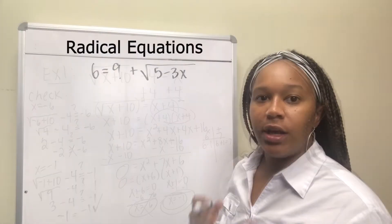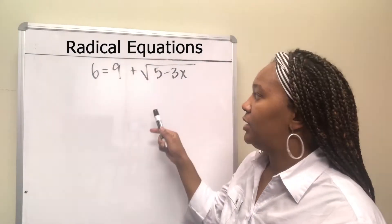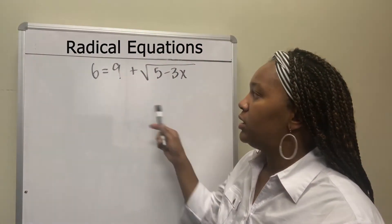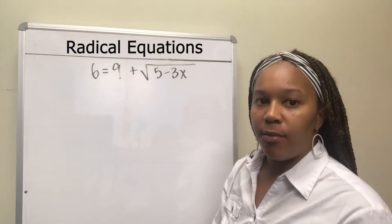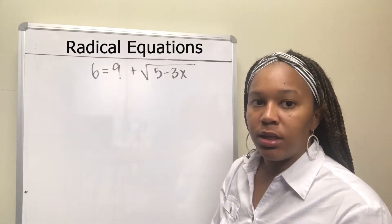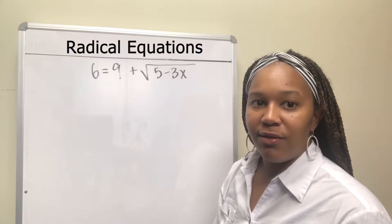Now pause and see if you can solve: 6 equals 9 plus the square root of 5 minus 3x.